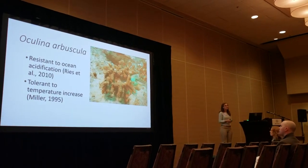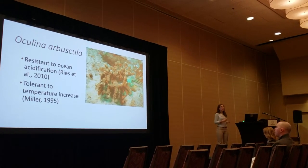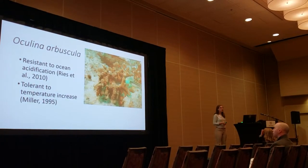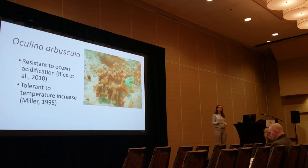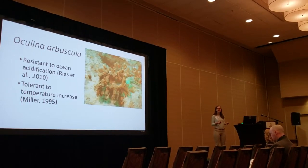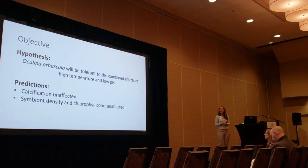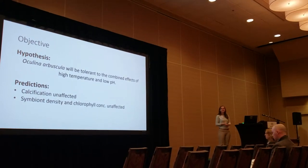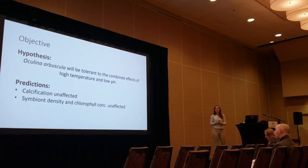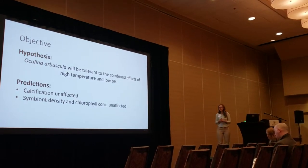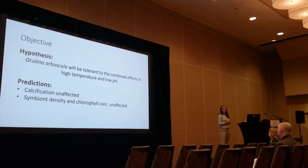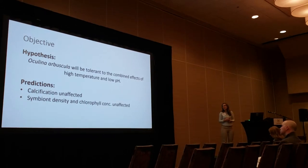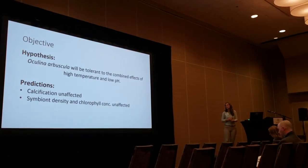This coral in adults has never been subjected to combined acidification and temperature variables in a laboratory study. However, as we just discussed, with Gray's Reef we are seeing those fluctuations in pH and temperature occurring at the same time. So with that, we think it's possible that Oculina arbuscula is actually tolerant to the combined effects of high temperature and low pH, because of the ecosystem conditions found in Gray's Reef and the natural fluctuations it experiences. That was our main hypothesis, and with that we predicted that calcification, symbiont density, and chlorophyll concentration would be unaffected by these combined variables.